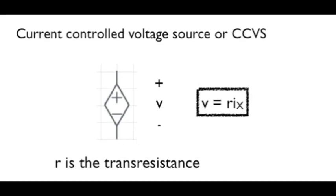Another important dependent source is the current-controlled voltage source. Again we see here the symbol for a dependent voltage source, but this time that voltage depends on a current flowing somewhere in the circuit. The voltage is equal to a quantity times the current, and R is that quantity. R has units of volts over amps or ohms, in other words, a resistance. It's called a trans-resistance because the voltage is in one part of the circuit and the current in another.